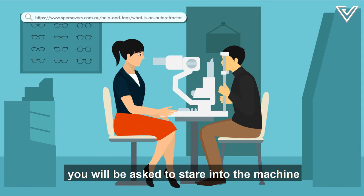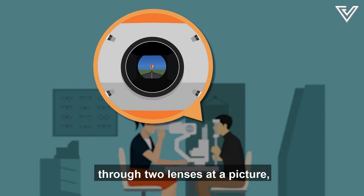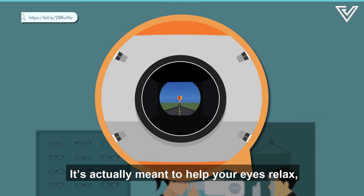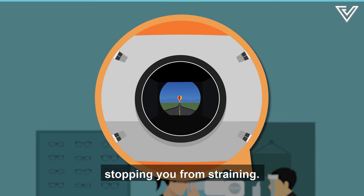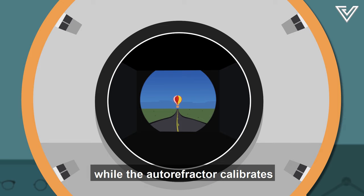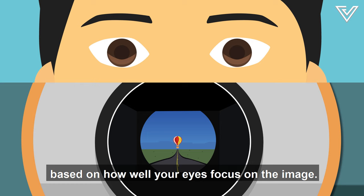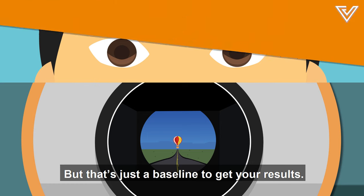During an eye exam, you will be asked to stare into the machine through two lenses at a picture, like the hot air balloon at the end of a long straight road, and focus on it. It's actually meant to help your eyes relax, stopping you from straining. The image will then get blurred while the auto-refractor calibrates an estimation of your prescription based on how well your eyes focus on the image. But that's just a baseline to get your results.